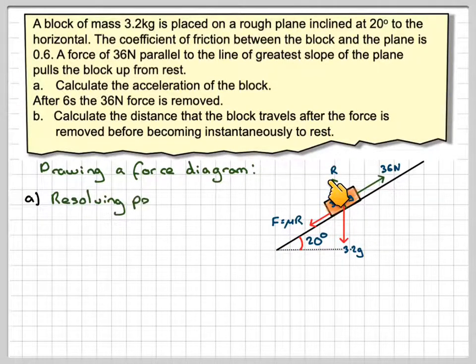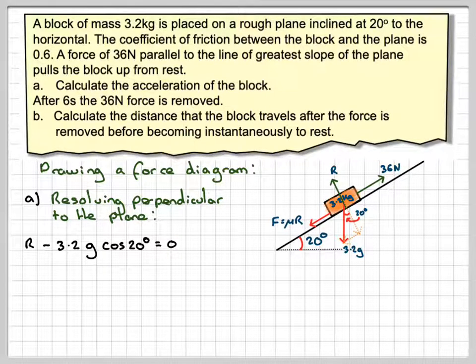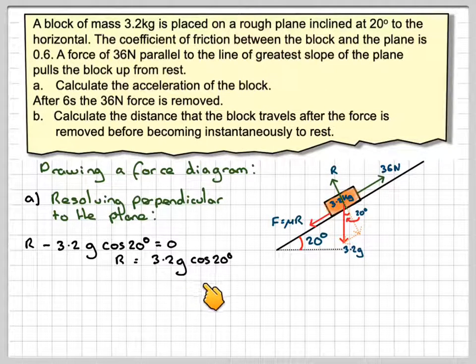So, resolving perpendicular to the plane, we're going to have R. And then we're going to have this component of the weight. It's 20 degrees, same as this. So that will be 3.2g cos 20 degrees, and therefore R equals 0, because there's no movement that way. And therefore, R will be 3.2g cos 20.